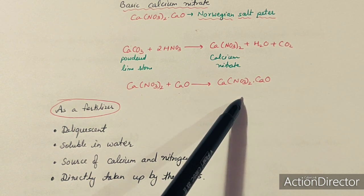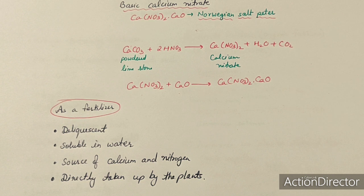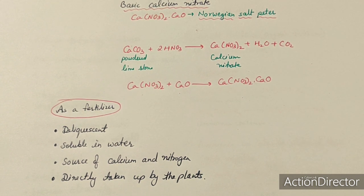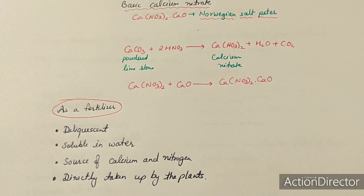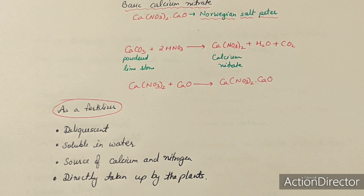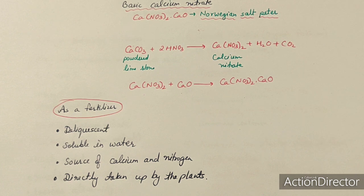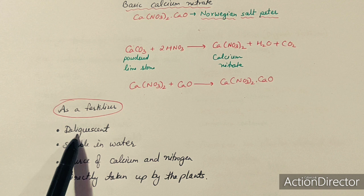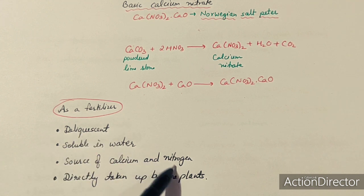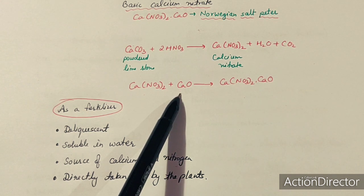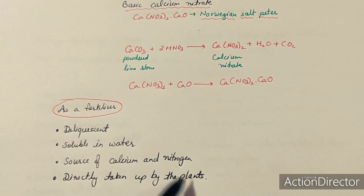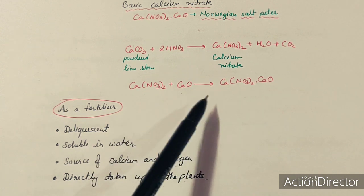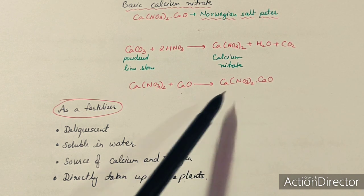Nitrates are highly soluble. Plants generally absorb nitrogen from the soil in the nitrate form, so nitrates are directly absorbed. As a fertilizer, basic calcium nitrate is soluble in water, is a source of both calcium (secondary nutrient) and nitrogen (primary nutrient), and is directly taken up by the plant without further conversion, since plants absorb nitrogen in the nitrate form.